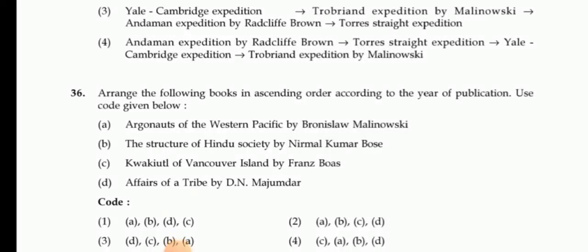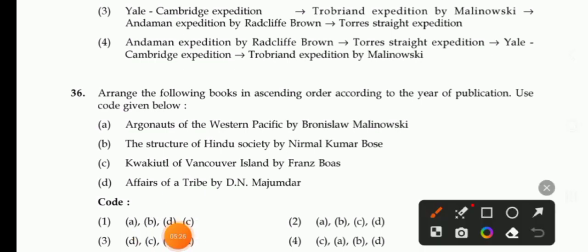Next question: Arrange the following books in ascending order according to year of publication — Argonauts of the Western Pacific by Malinowski, The Structure of Hindu Society by N.K. Bose, Kwakiutl of Vancouver Island by Boas, A Tribe in Bihar by Majumdar. The right answer is 4: sequence is C, A, B, D.